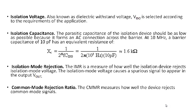Isolation voltage, also known as dielectric withstand voltage, is selected according to the application requirement. Isolation capacitance is the parasitic capacitance of the isolation device that should be as low as possible, since it forms an AC coupling across the barrier. At 10 MHz, a barrier capacitance of 10 pF has an equivalent resistance of 1.6 kΩ, creating a low impedance path. Isolation mode rejection ratio measures how well the isolation device rejects isolation mode voltage, and common mode rejection ratio measures how well it rejects common mode signals.